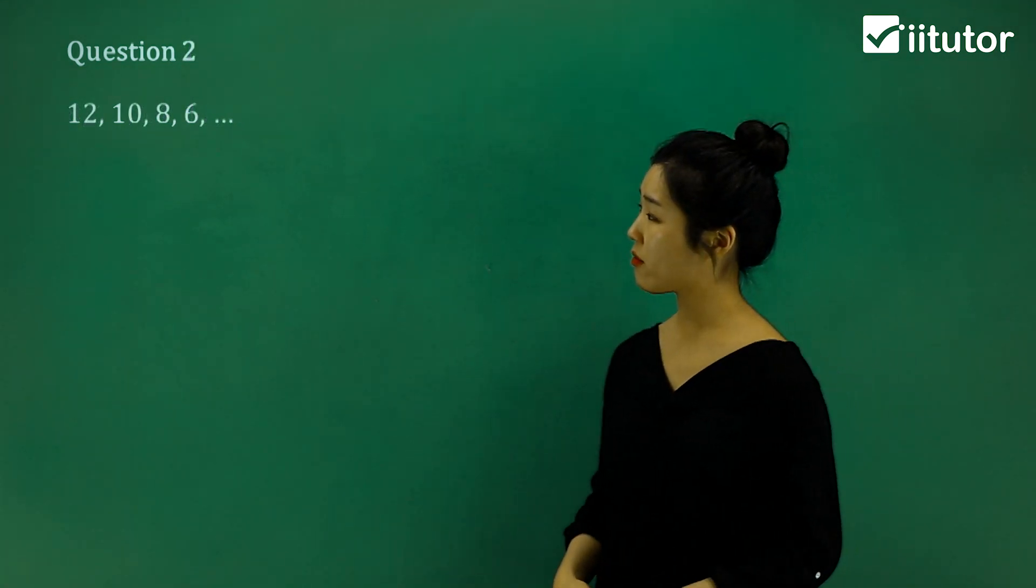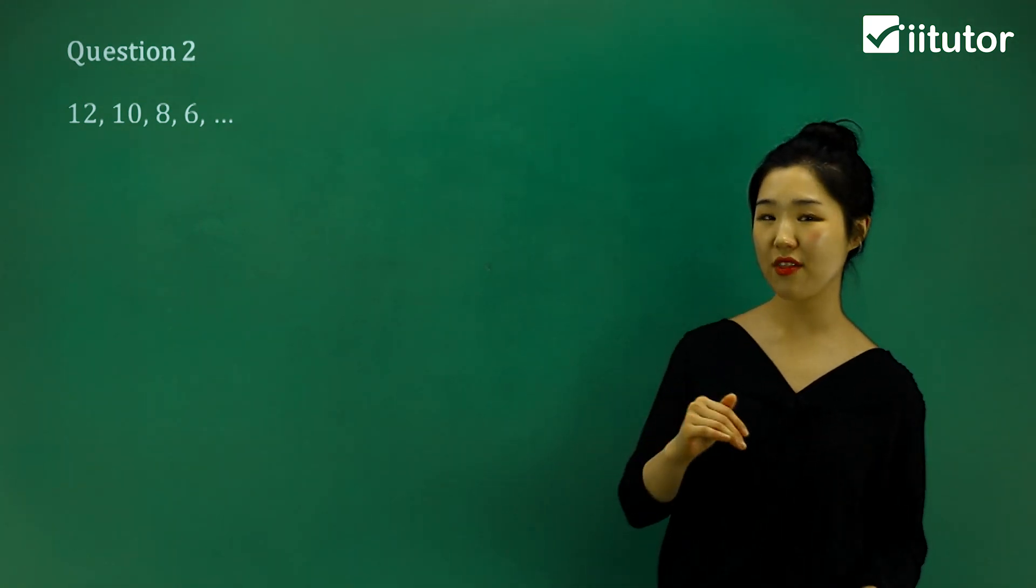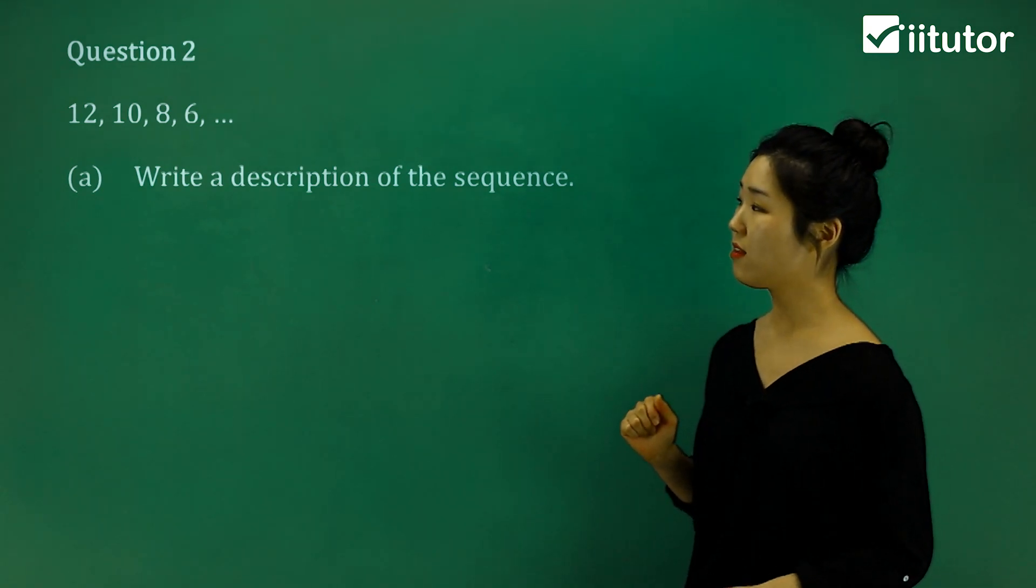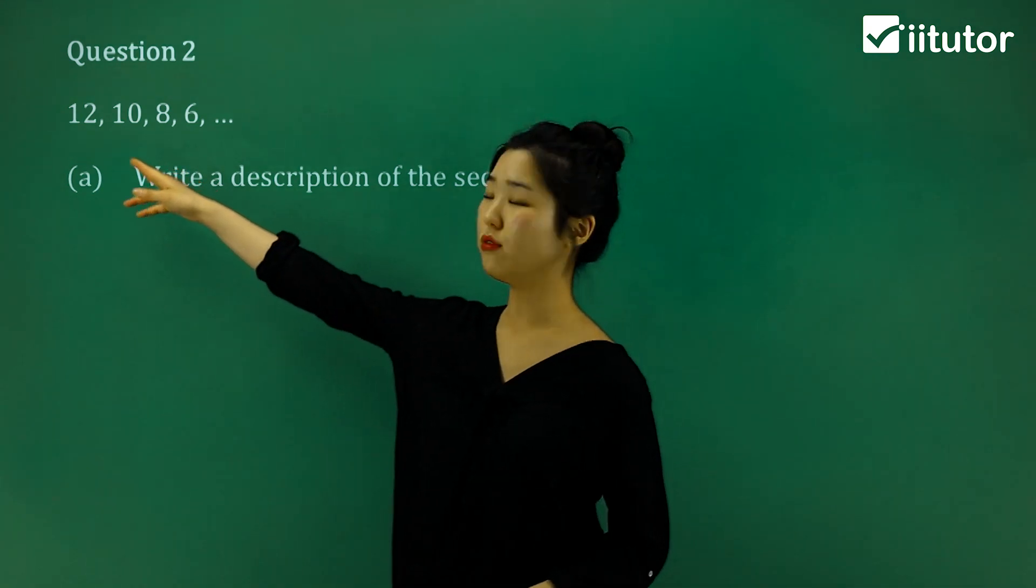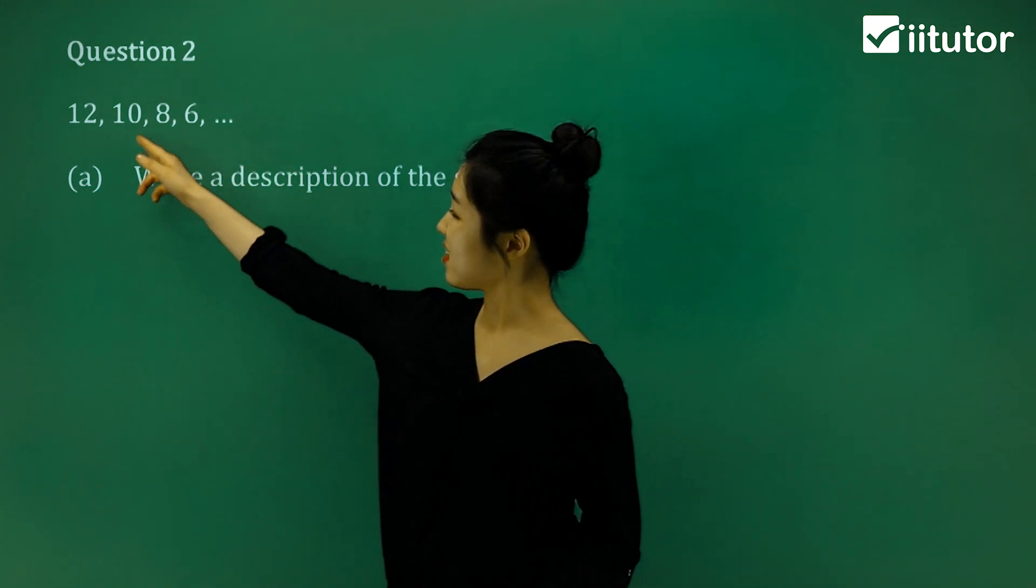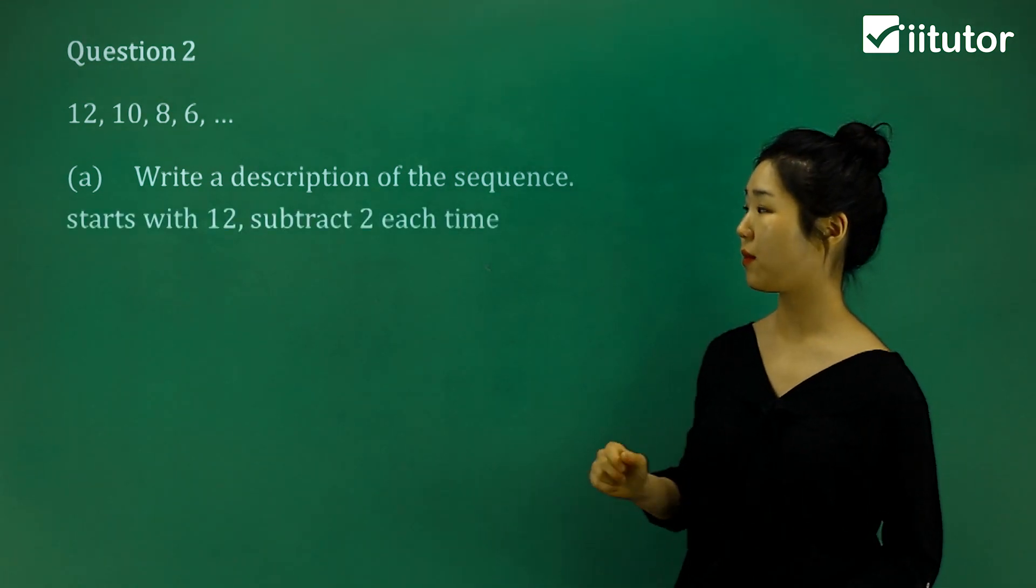So question 2. Again, we've got another sequence here. We've got 12, 10, 8, 6. It's going down this time. It's getting smaller, isn't it? So when it says write a description for these, we know that the first term is 12. And as I said, because we're getting smaller, I'm pretty sure we're going to be subtracting. You can see the difference is all 2, which means we're subtracting 2 each time.